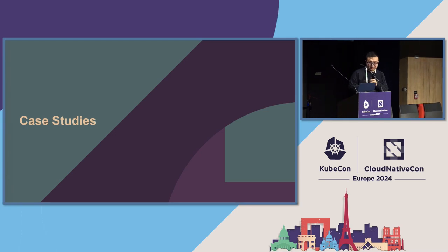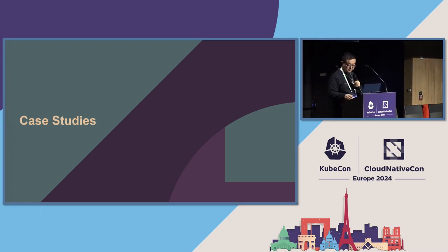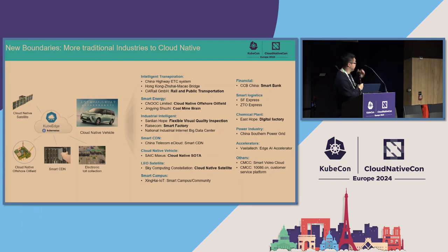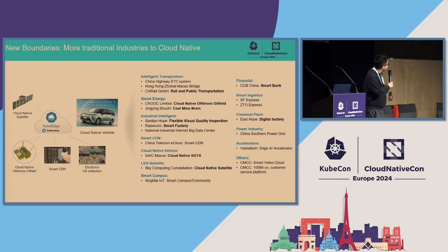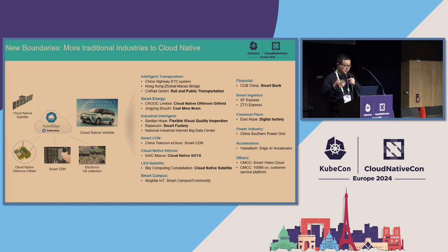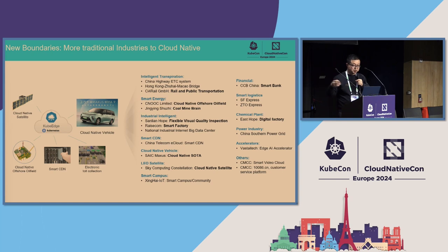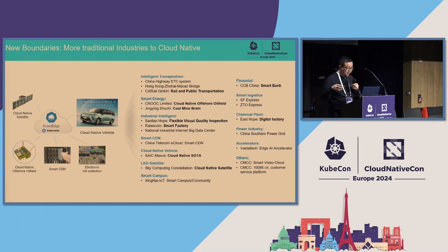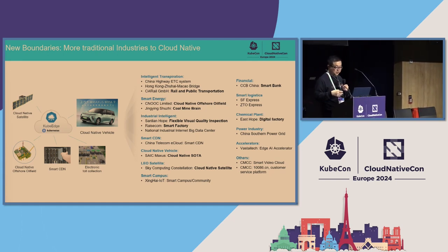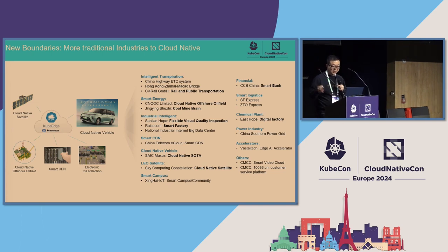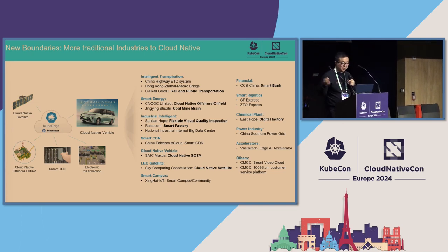Next I'll introduce some representative use cases from the KubeEdge community. We have many use cases across many industries including intelligent transportation, smart energy, industrial intelligence, smart CDN, cloud-native vehicles, satellites, smart campuses, financial services, smart logistics, chemical plants, and many others.